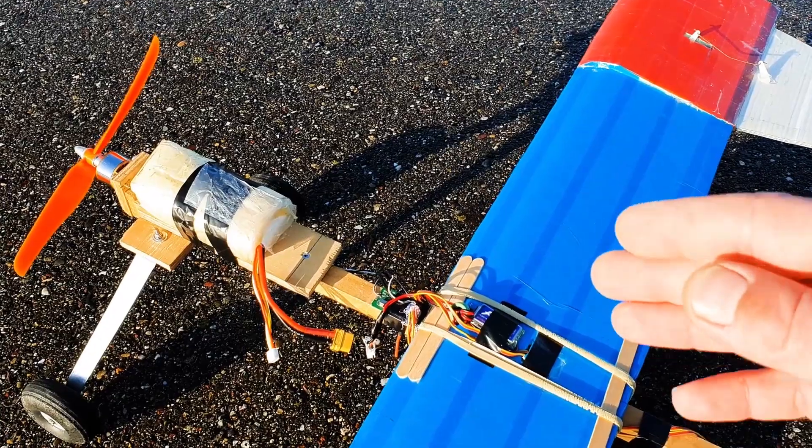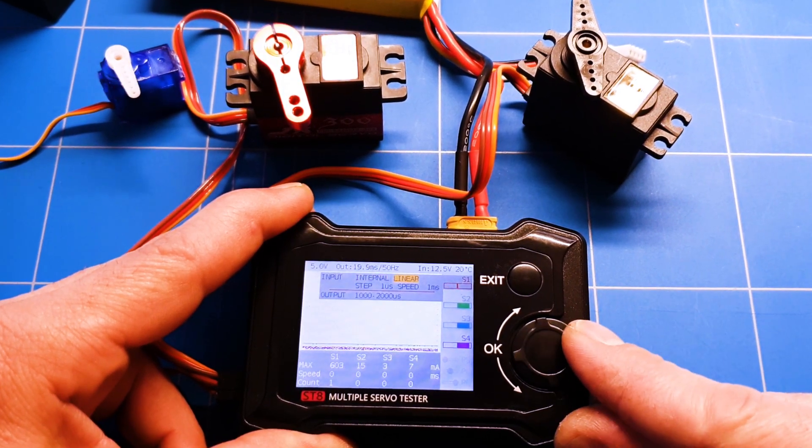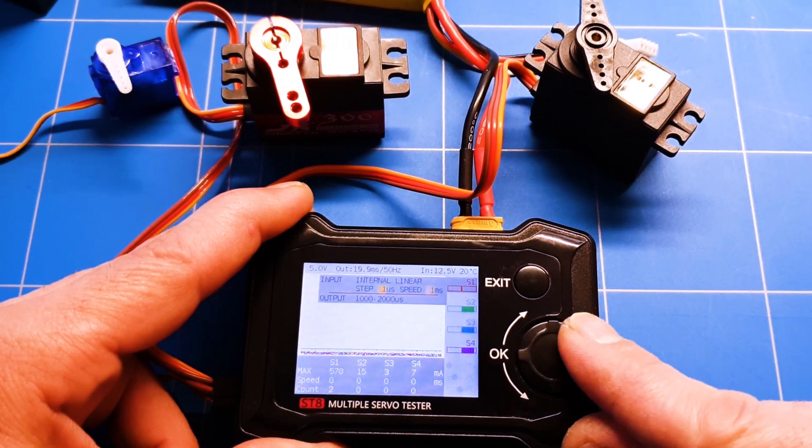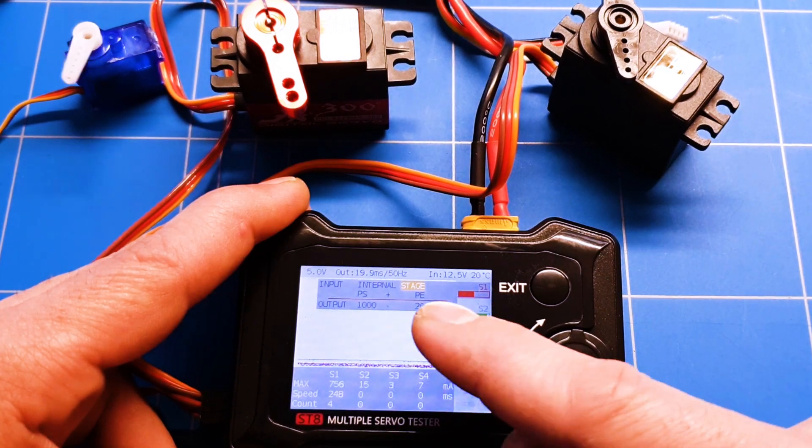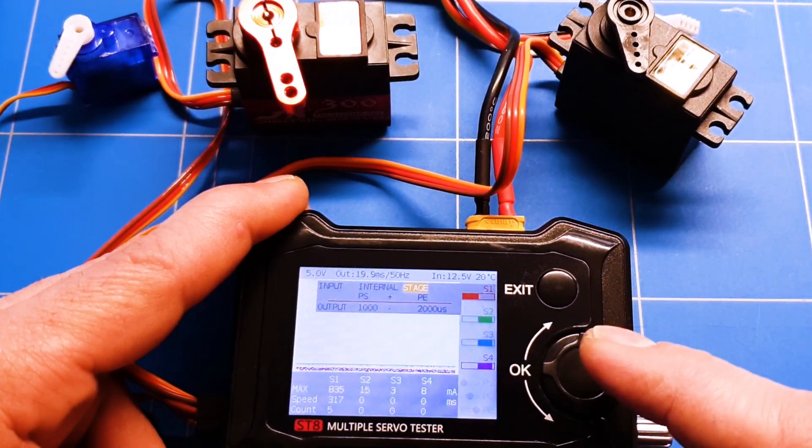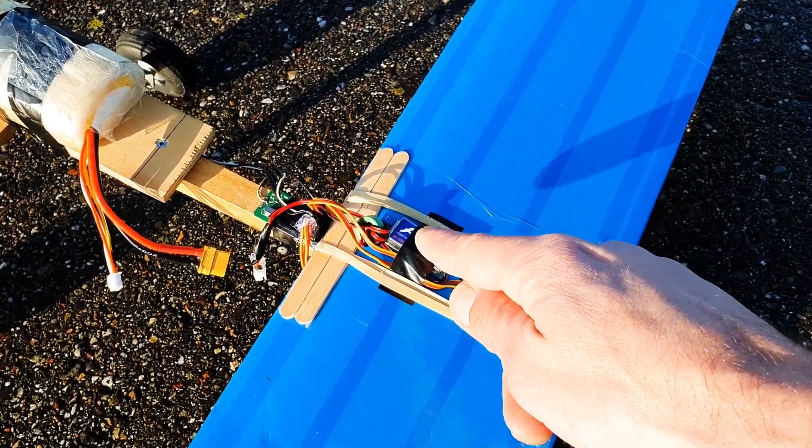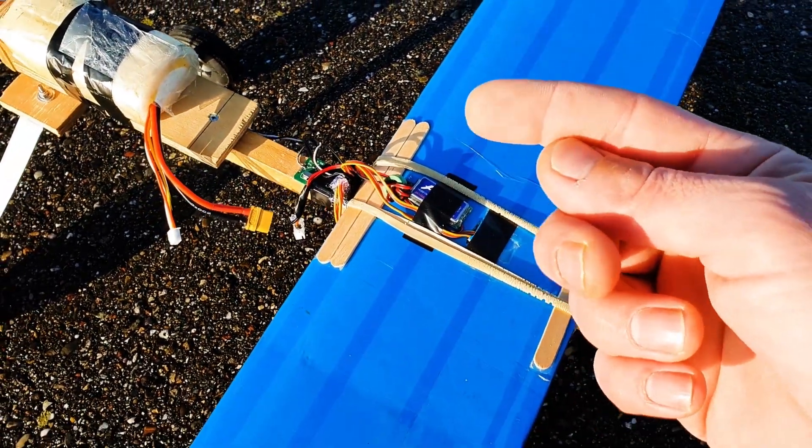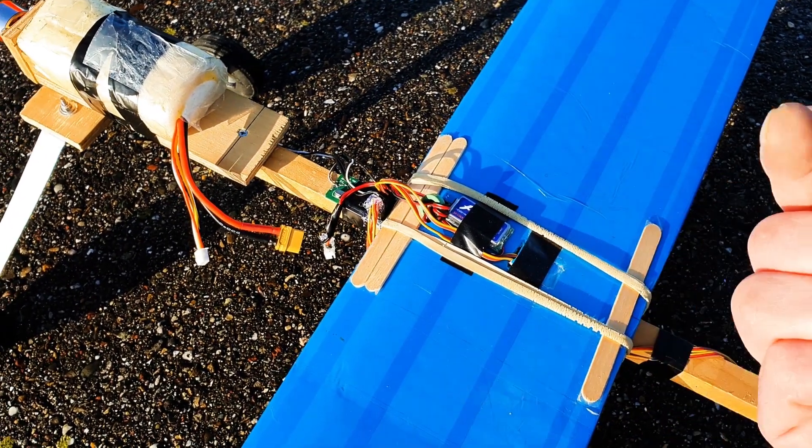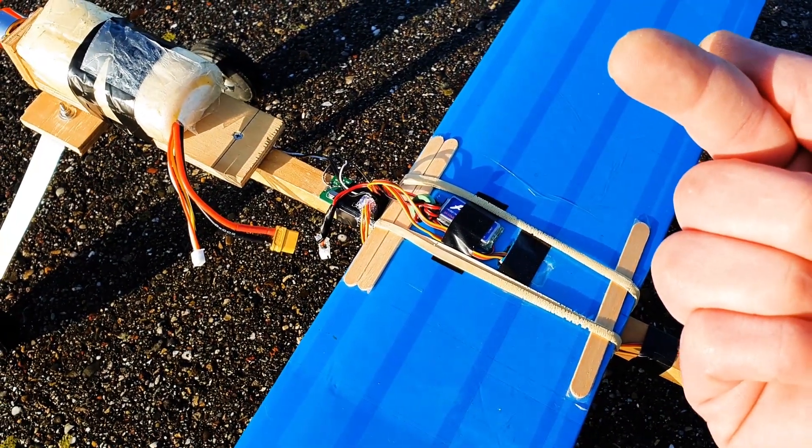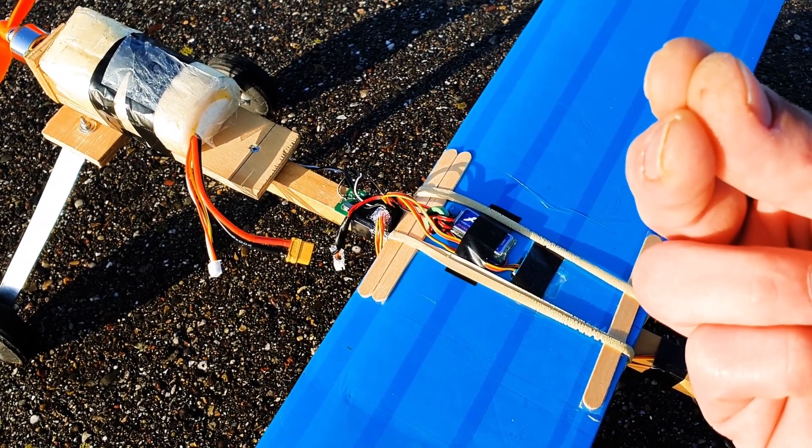In the last episode, we tested the servos using the new Toolkit RC servo tester that also showed the amps drawn. We found that these 9-gram HTX servos draw 0.6 amps per servo. With 4 servos, that's 2.4 amps, and we had a BEC that was only rated for 2 amps, so it was too low. We upgraded the BEC - the links are down below, and the video about the servo toolkit is linked up here.